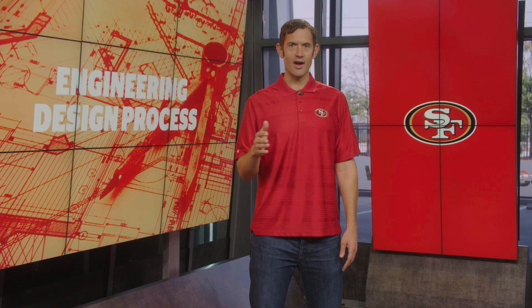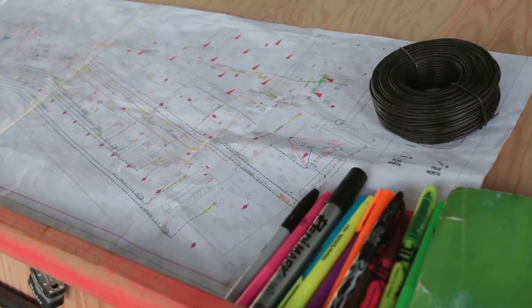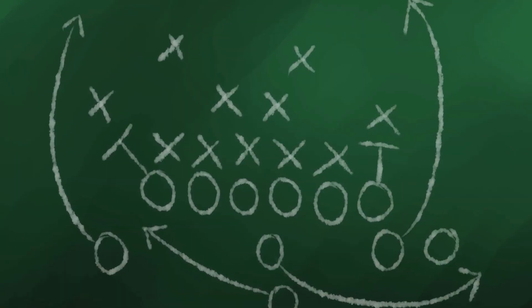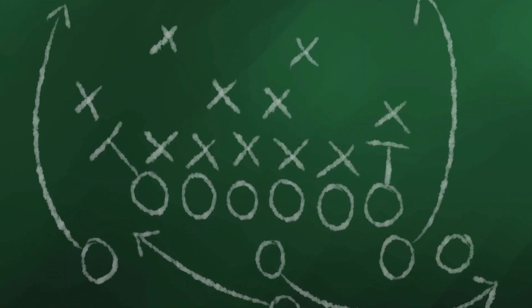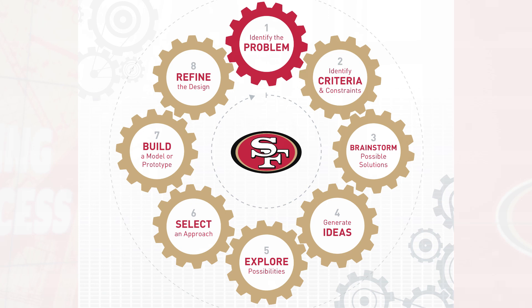Processes are present in our world all the time and are especially found in the sports we play. Take the game of football. From the design of a stadium to the execution of an offensive play, there are countless processes involved. One of the most important that any student can learn is known as the engineering design process, which is a series of steps that engineers follow when they're trying to solve a problem. The steps help support the design, construction, and refinement of a product or a system.